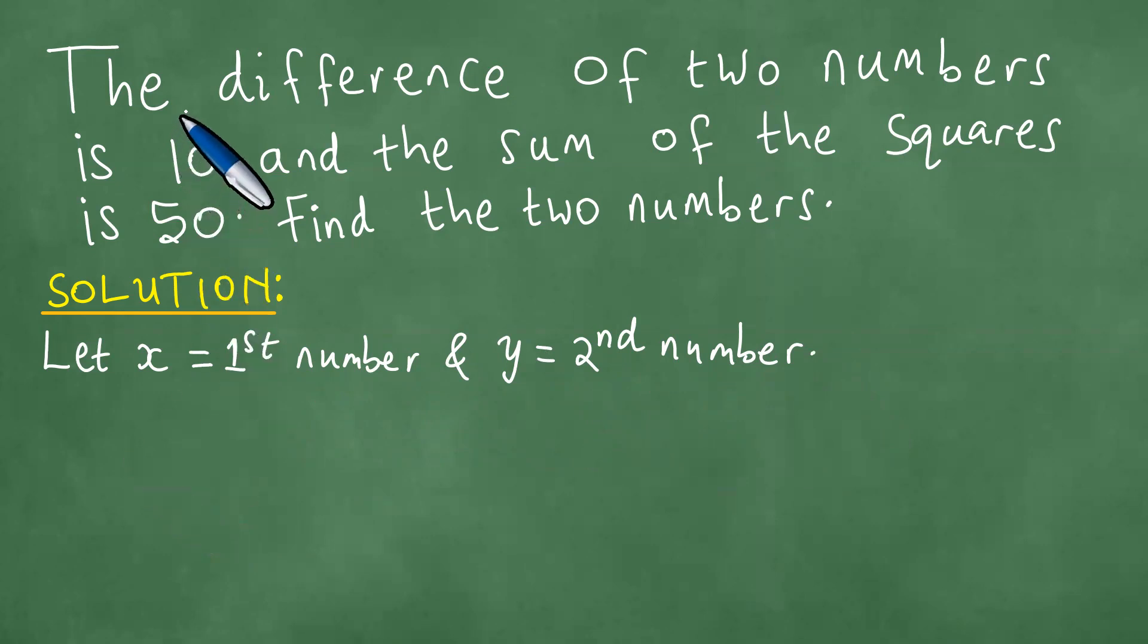Moreover, we have been told that the difference of the two numbers is 10. So we take the first number minus the second number and the result is exactly 10. This implies that x equals y plus 10.